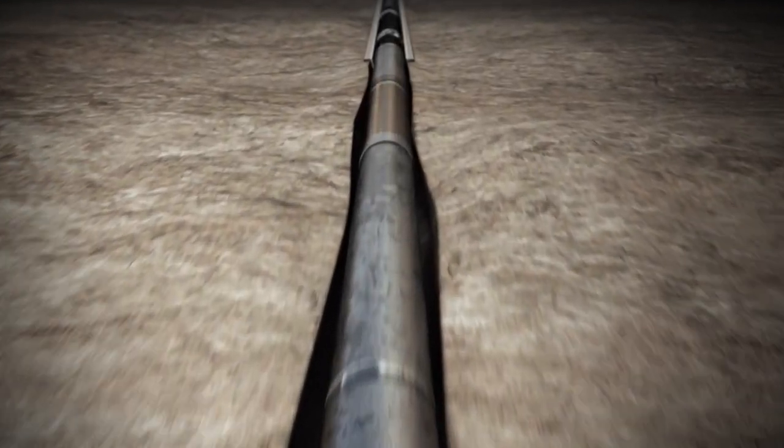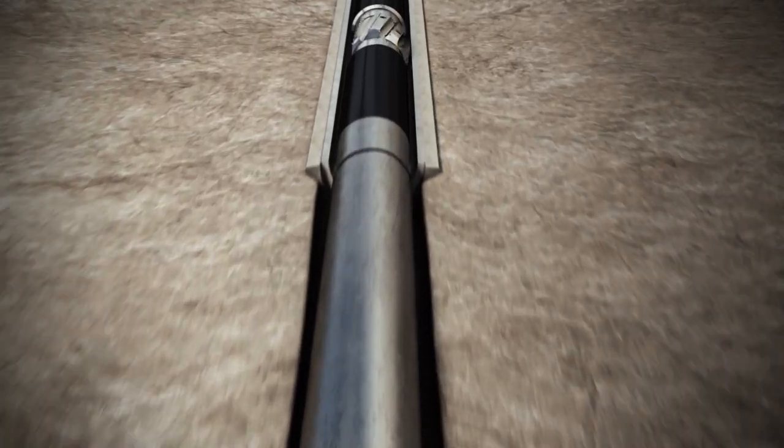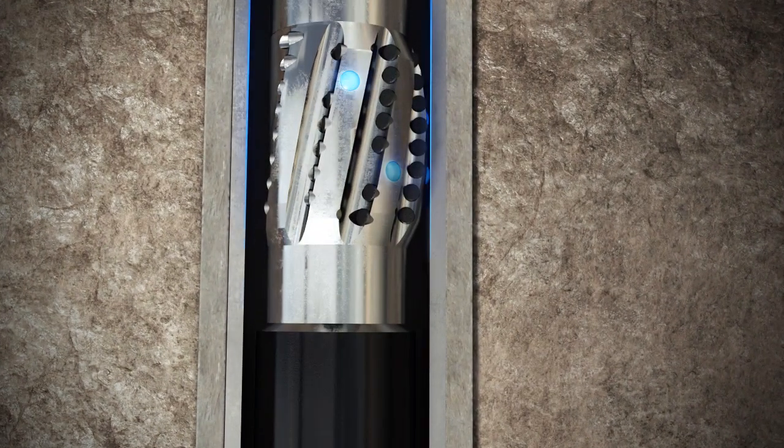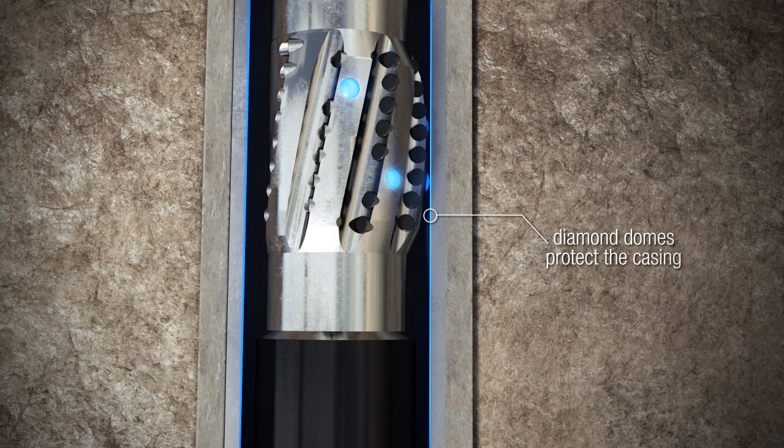Sitting in the drill string above the directional bottomhole assembly, Drill-N-Ream eases into the wellbore, utilizing its diamond domes to protect the casing.